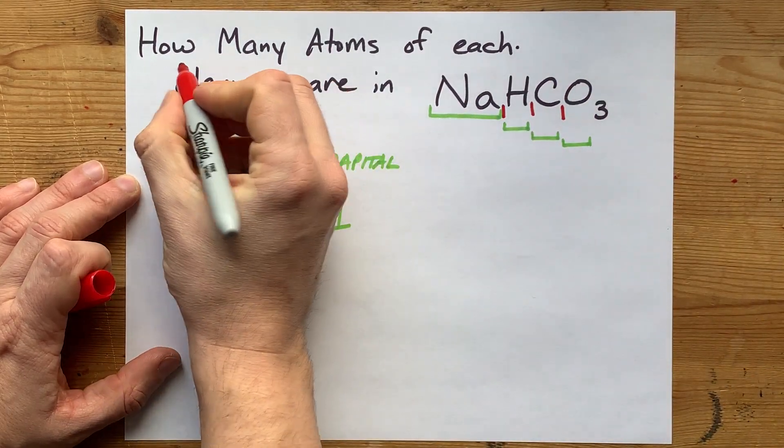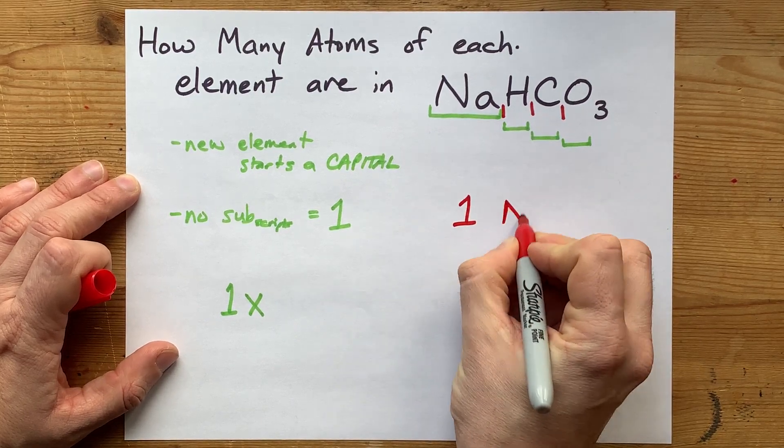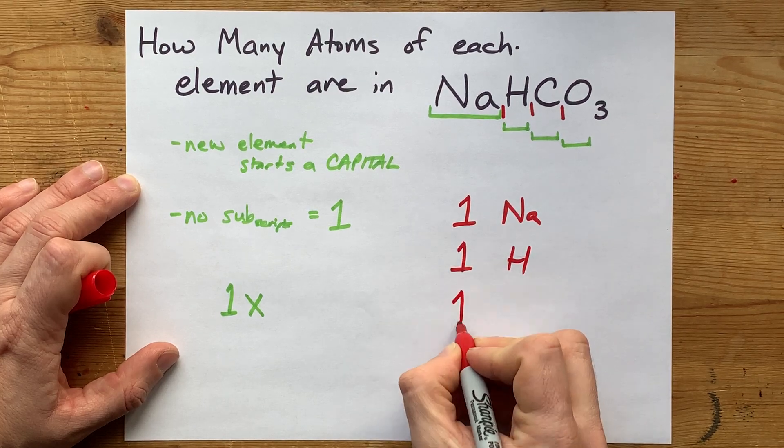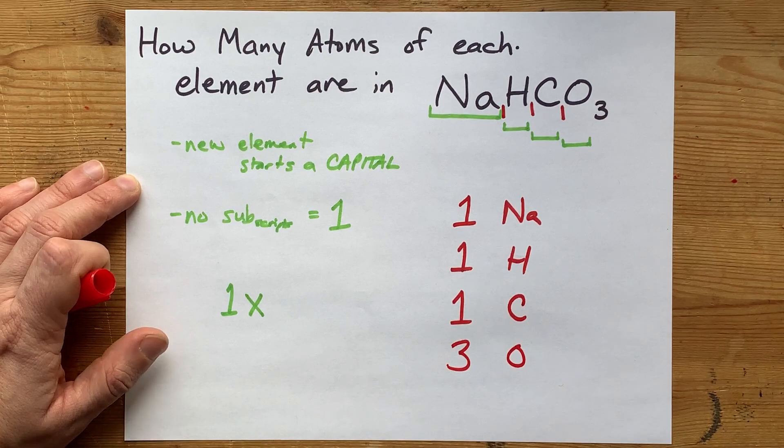So the answer to the question, how many atoms of each element are in it, is that we have 1 sodium atom (Na), we have 1 capital H, we have 1 capital C, and we have 3 capital Os.